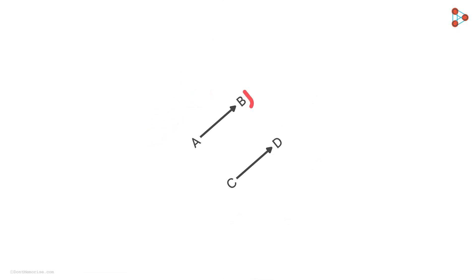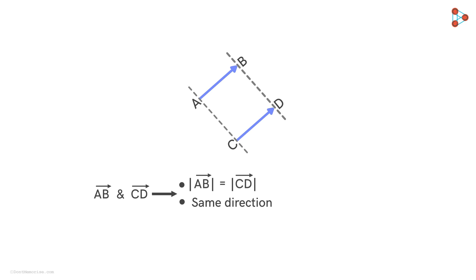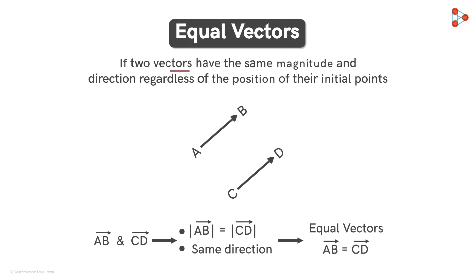Now consider vector AB and vector CD. They both are directed in the same direction and have the same magnitude. So we can say that vector AB is equal to vector CD. Two vectors are said to be equal if they have the same magnitude and direction, regardless of the position of the initial points.